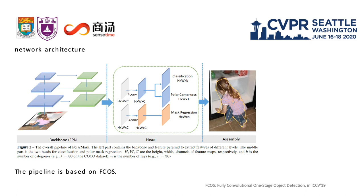Here we introduce our PolarMask, a one-stage method. PolarMask is a simple unified network composed of a backbone network, a feature pyramid network, and shared heads. The first branch is the classification branch, which is the same as FCOS. The second branch is polar centerness, and the third branch is the mask regression branch.